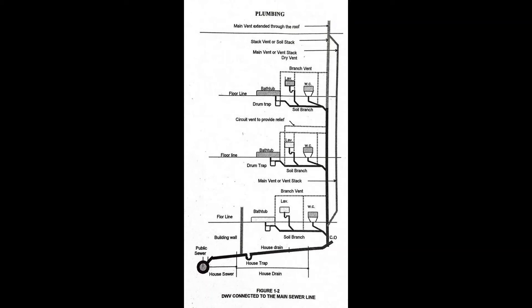Plumbing system includes the water supply distribution pipe, plumbing fixtures and traps, soil waste and vent pipes, house drain and house sewer, including the respective connections, devices, and other appurtenances within the property lines of the premises and water treating or water using equipment.